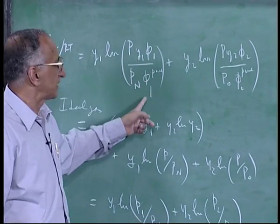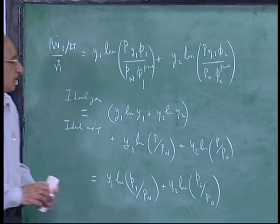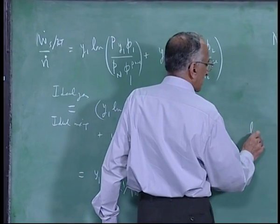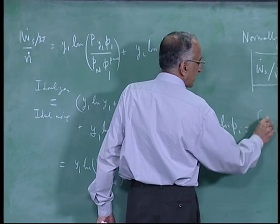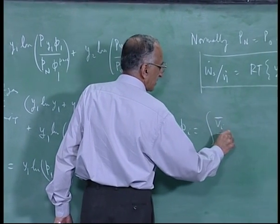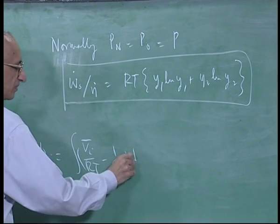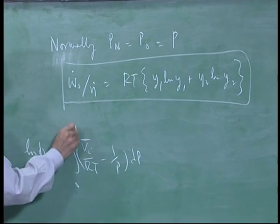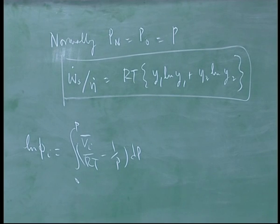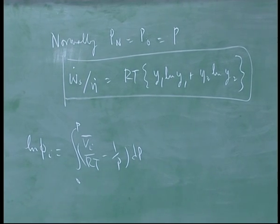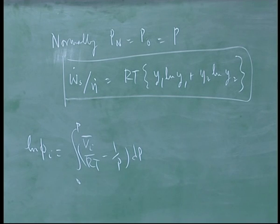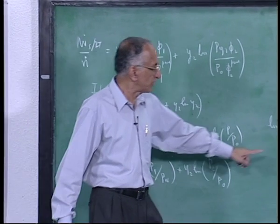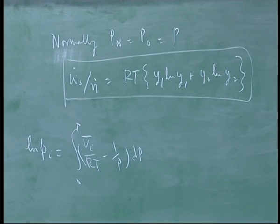Because of pressures, if there is non-ideality, you have to make these corrections. But you can calculate them quite easily. You know if you want to calculate non-ideal corrections, you know log phi i is simply integral V i bar by RT minus 1 by P dP from 0 to P. You have to take experimental data on V i bar and integrate that quantity, you get phi i.